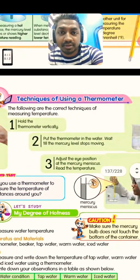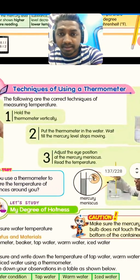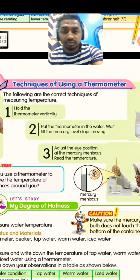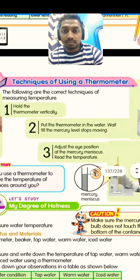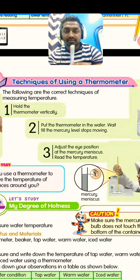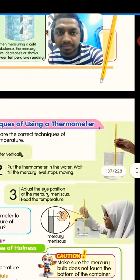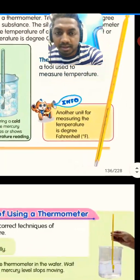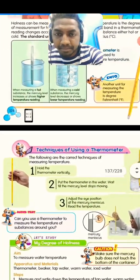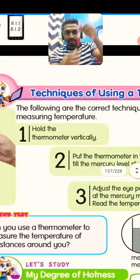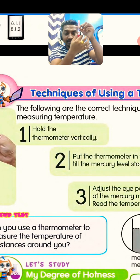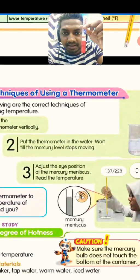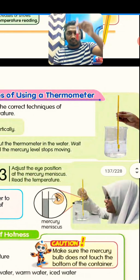There are specific techniques to use a thermometer — it's a science apparatus, so we can't use it casually. Number one: hold the thermometer vertically, with the bulb — this part at the bottom — facing downward.